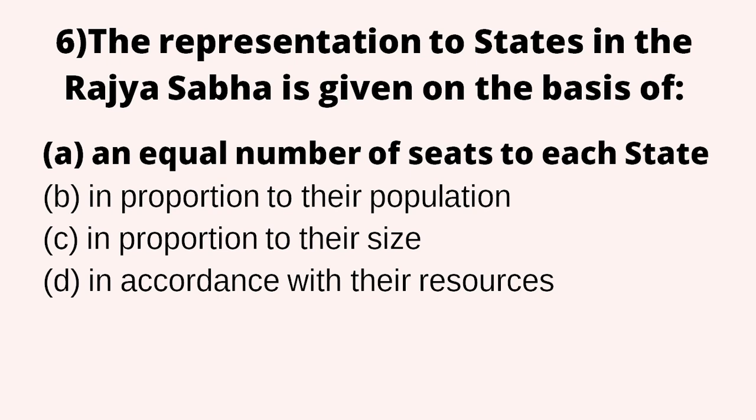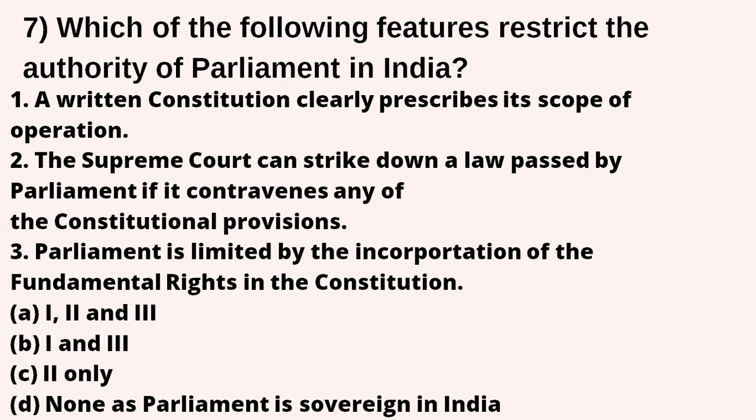The representation of states in the Rajya Sabha is given on the basis of what? Option A — an equal number of seats to each state; option B — in proportion to their population; option C — in proportion to their size; option D — in accordance with their resources. The right answer is option B — in proportion to their population. Let's move on to the next question.